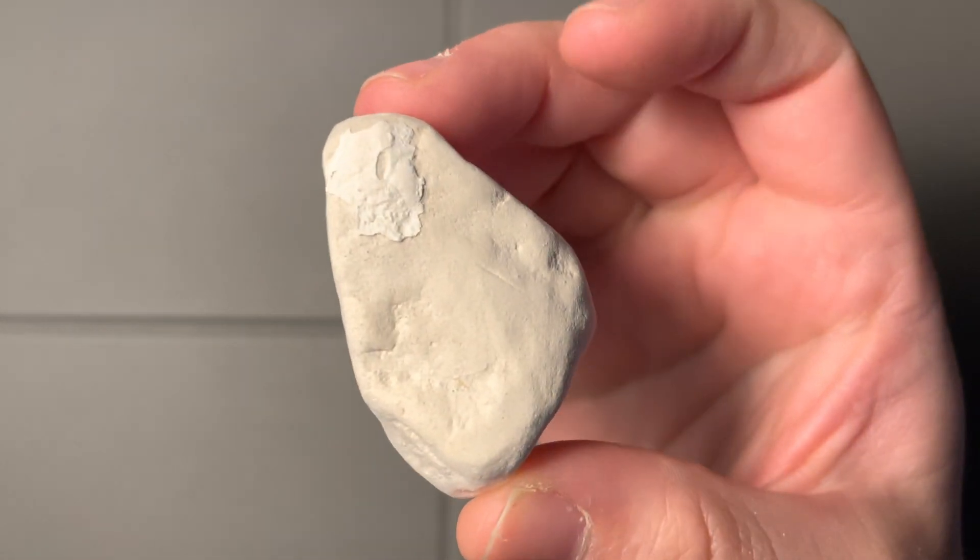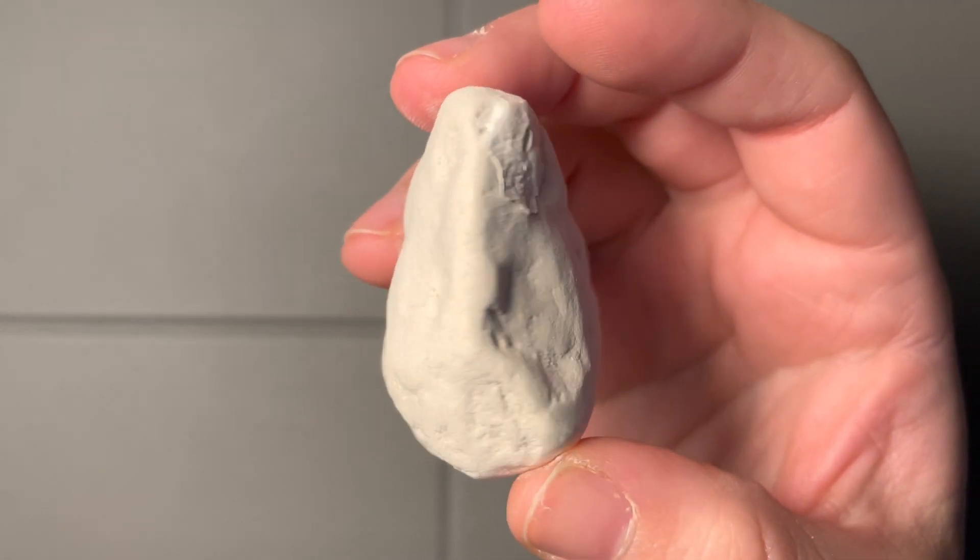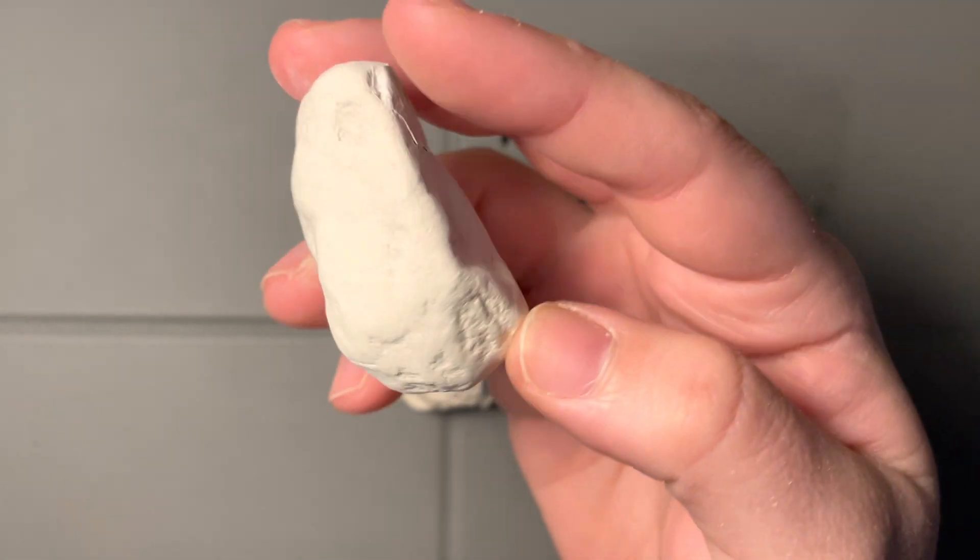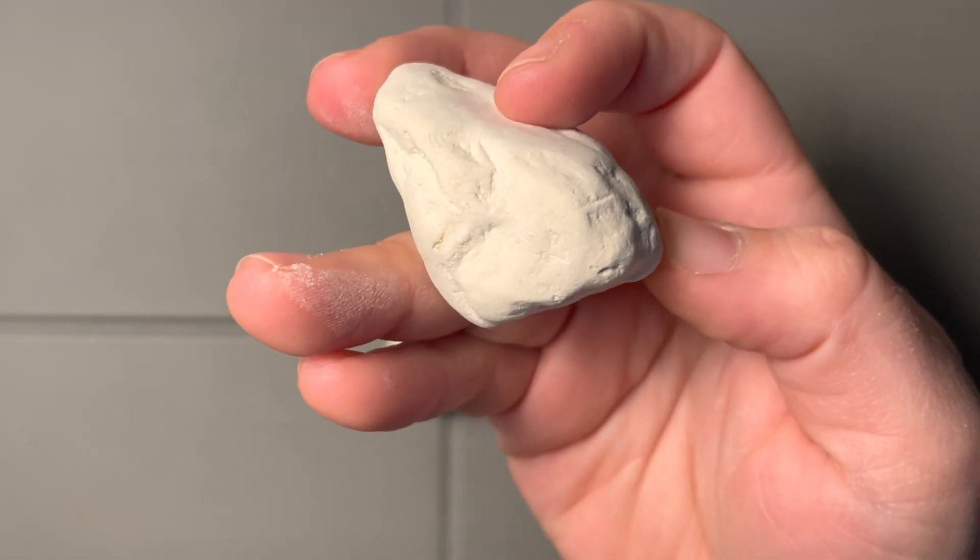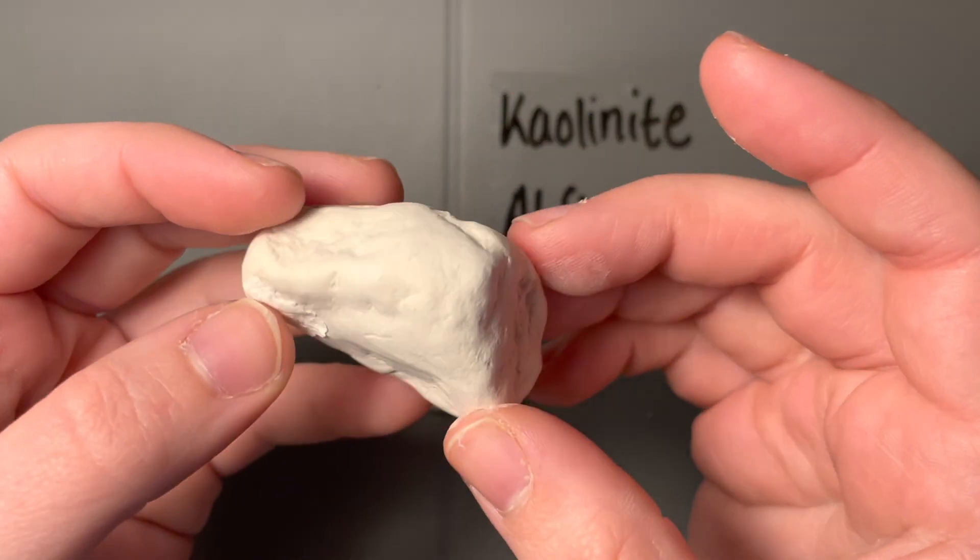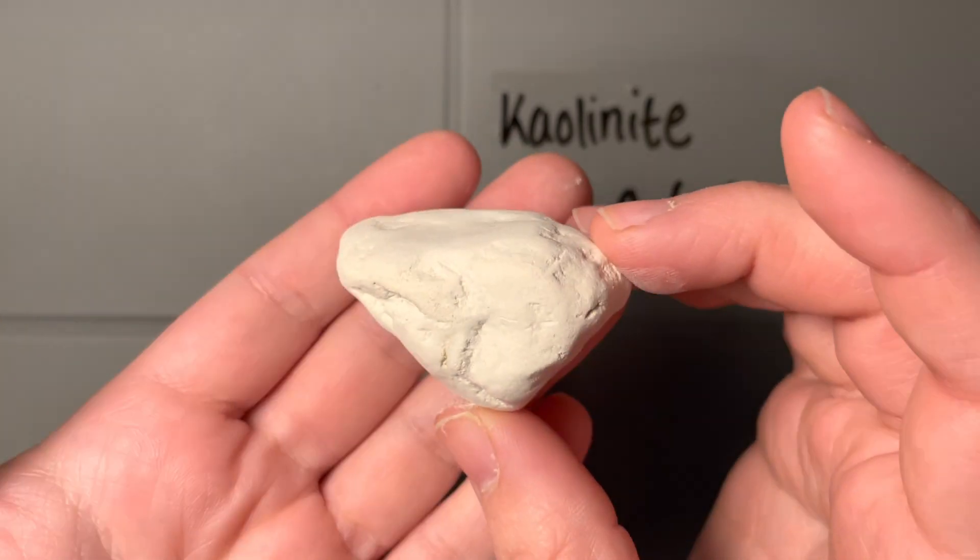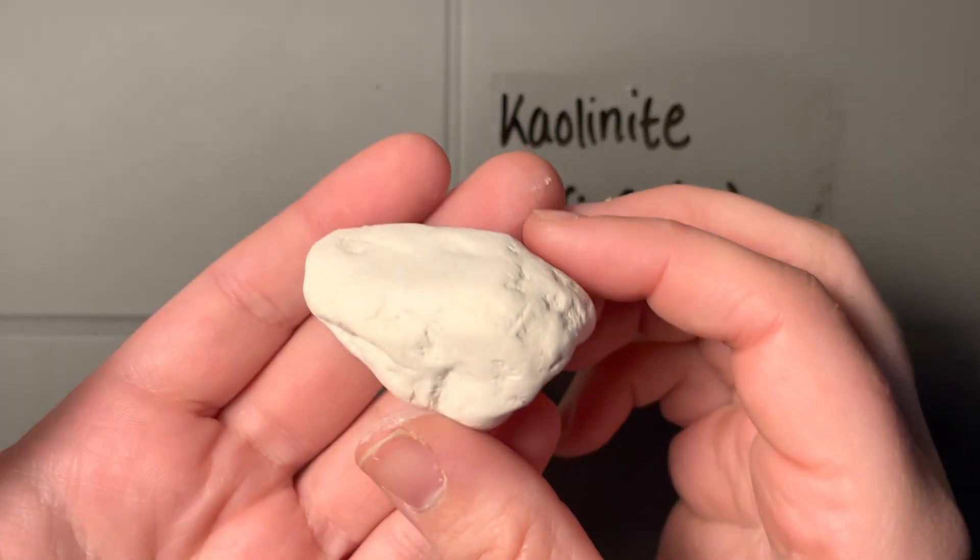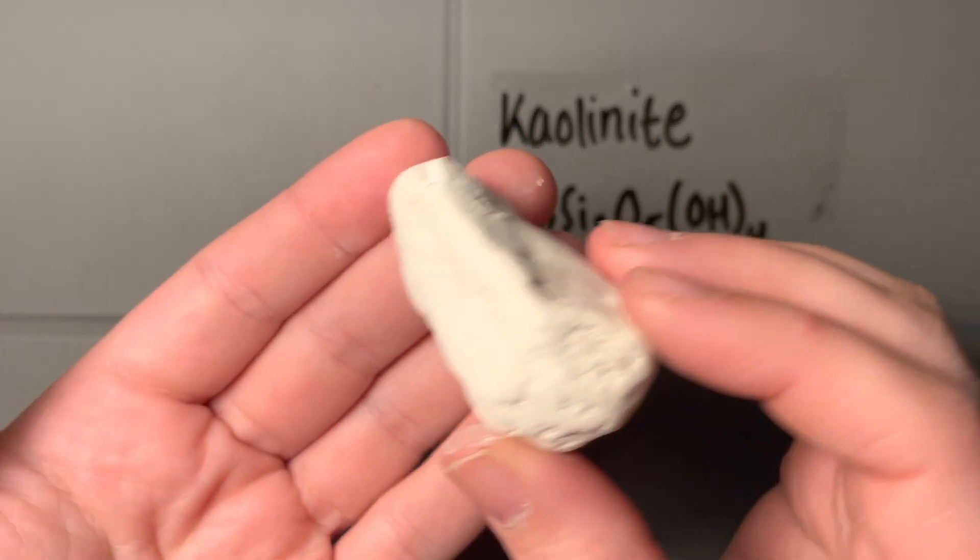But when I look at this, there is not a thing being reflected. There is no crystal face that I can see. This kind of massive habit, just because of how this chalk forms. I'm not going to see a crystal face.